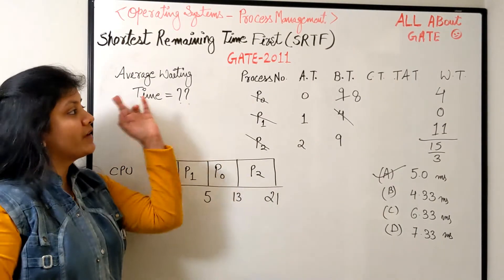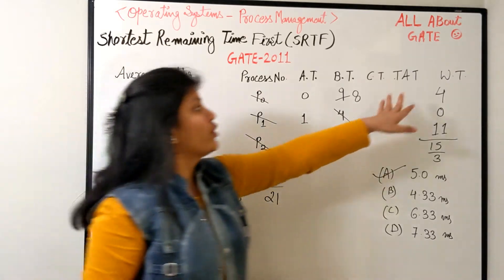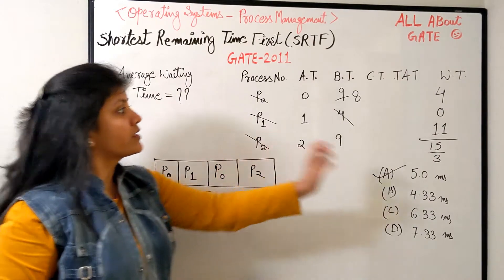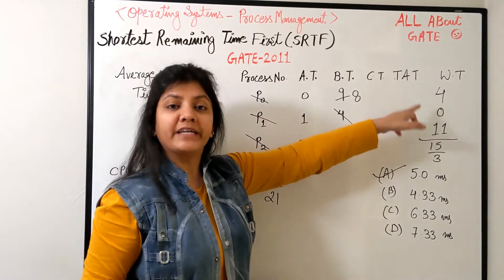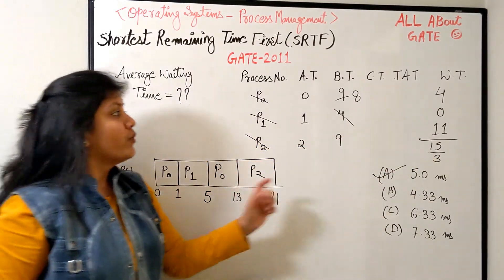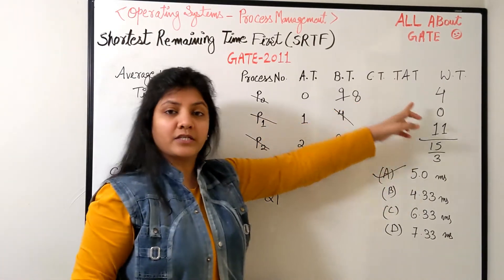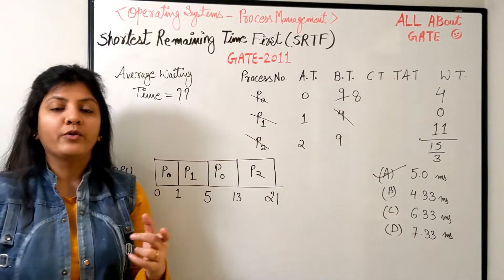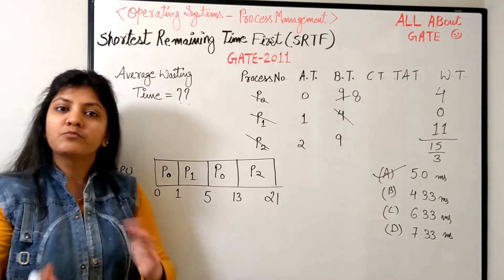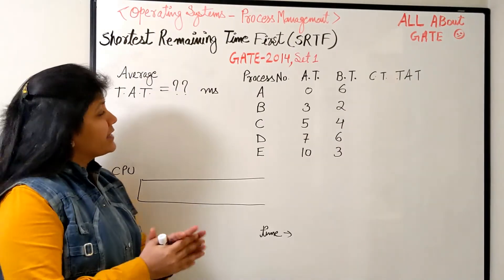This is how you schedule processes with SRTF. If the requirement is waiting time, you can read it directly from the Gantt chart. If you're not comfortable, find the completion time, then turnaround time, and remember: waiting time equals turnaround time minus burst time. You can go that way also.